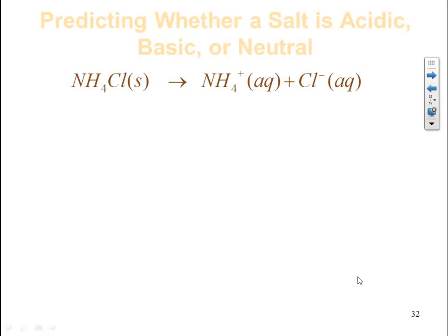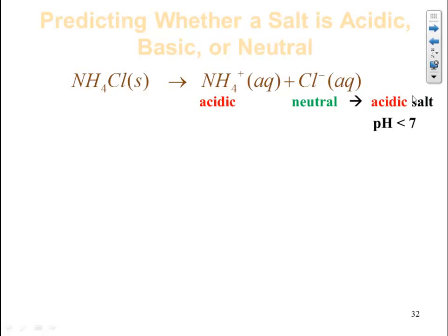Let's look at an example: ammonium chloride. We examine the cation and anion separately. Is NH4⁺ one of the cations we memorized as neutral? No — so it adds acidity to the salt. Is Cl⁻ one of the anions we memorized as neutral? Yes — so it contributes neutral. Since I have an acidic cation and a neutral anion, the overall salt is acidic, and we expect the pH to be less than 7.